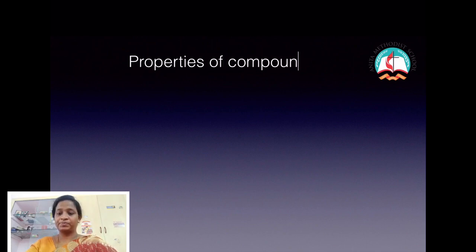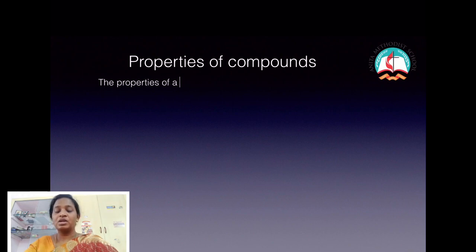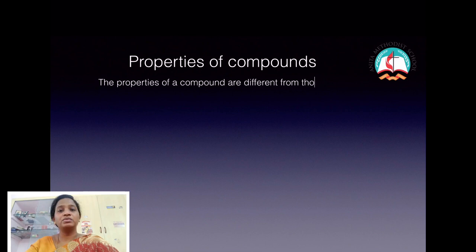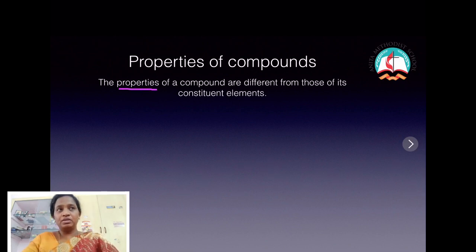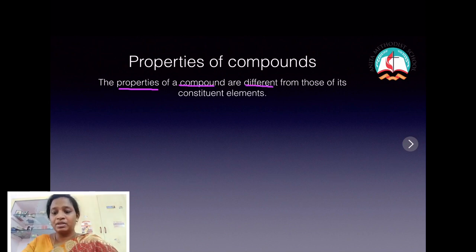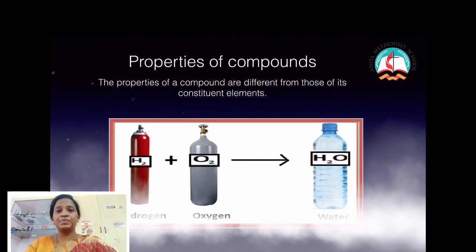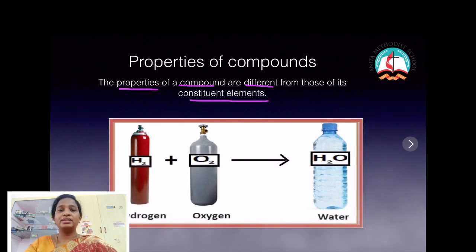The next property of a compound is that the properties of a compound are entirely different from those of its constituent elements. For example, taking water again: water is liquid at room temperature.